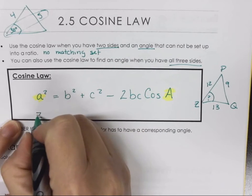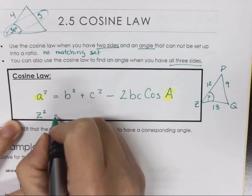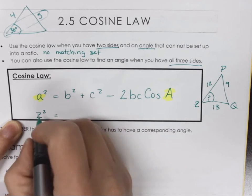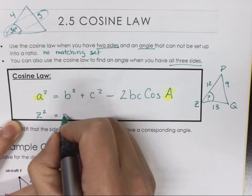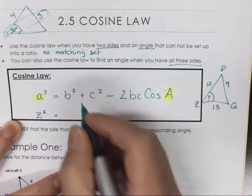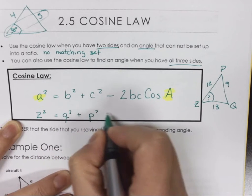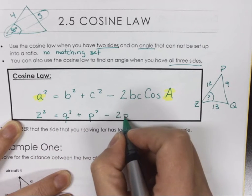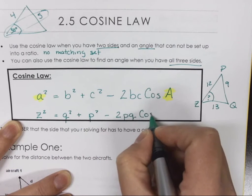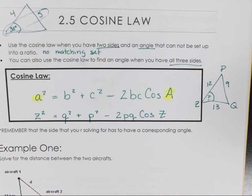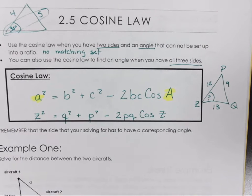I want to show you guys the earmuffs of your equation. They have to match. Let's say I have a triangle with z, p, and q. This is 12, this is 9, and this is 13, and I'm trying to find angle z.